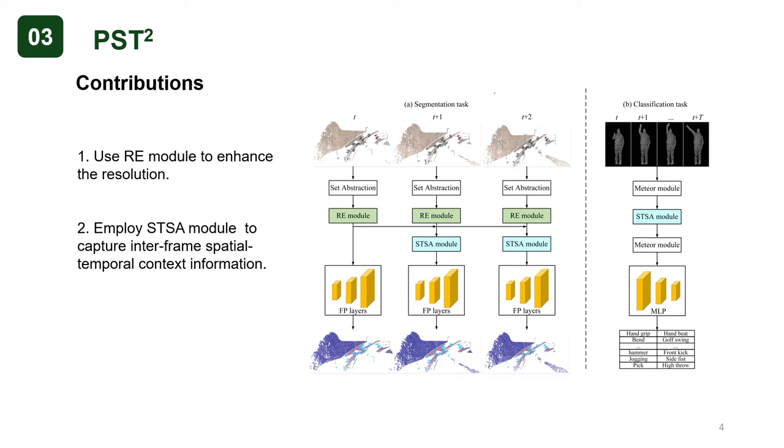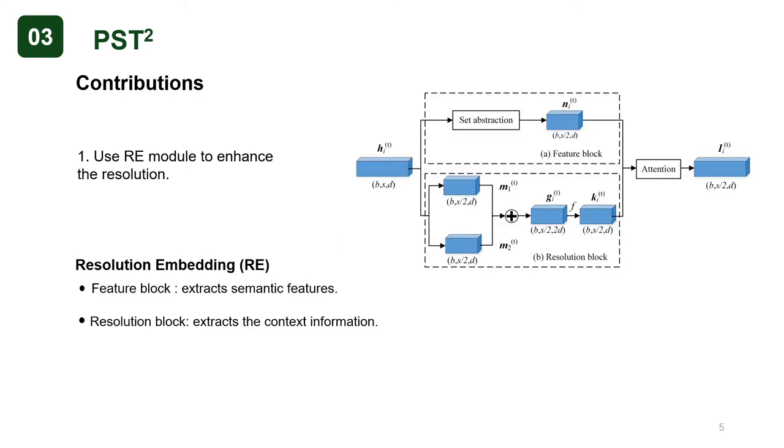For 3D action recognition, we insert the STSA module into the encoding layer of MeteorNet. The RE module consists of two blocks. The feature block extracts semantic features, and the resolution block extracts the spatial context information.